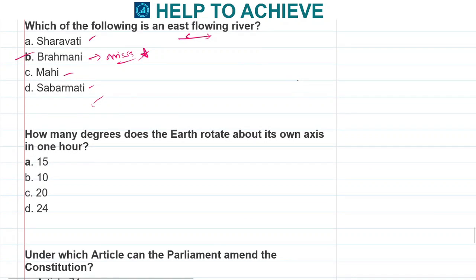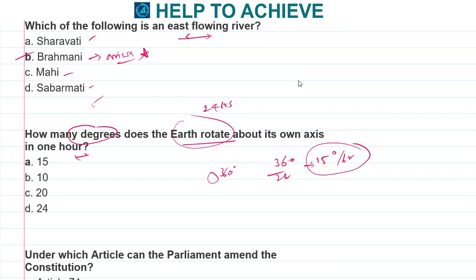How many degrees does the Earth rotate about its own axis in one hour? We know that the Earth's rotation takes completely 24 hours. Assuming the Earth is a sphere, it has to rotate 360 degrees. So 360 divided by 24, which is 15 degrees per hour, is the rotation of the Earth. The correct answer is 15.